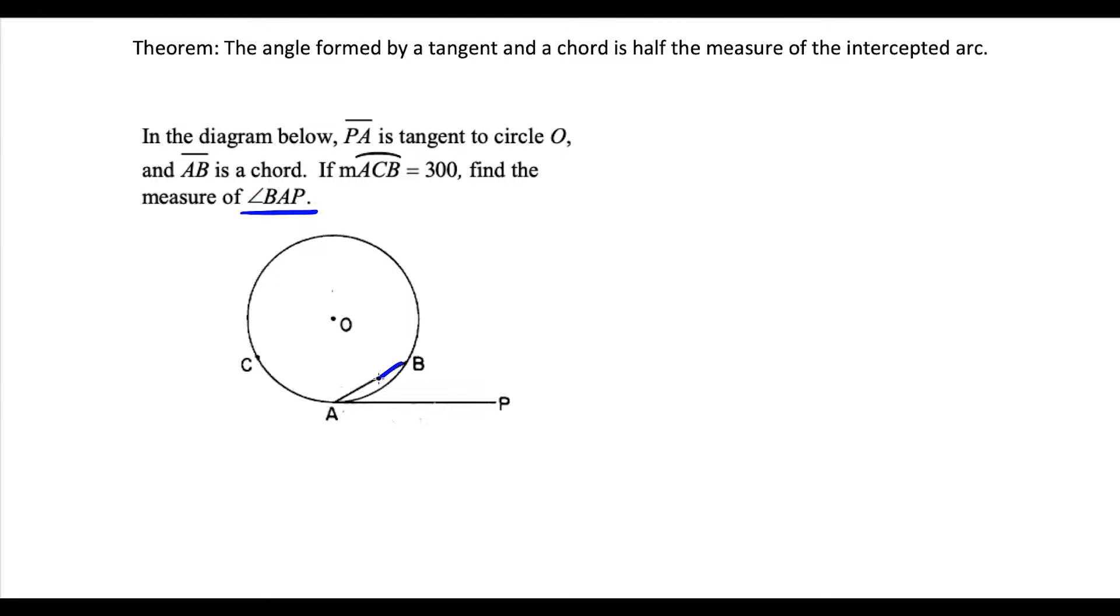We want to find the measure of angle BAP. To find this, we're going to use the theorem written above. The measure of the big arc ACB is 300 degrees, which tells us the measure of the little arc AB, the leftover, is 60 degrees, because there's 360 degrees in a full circle.